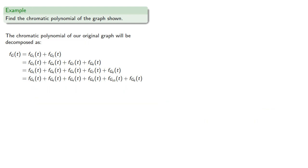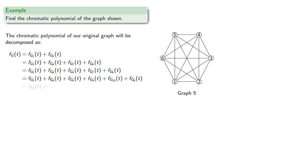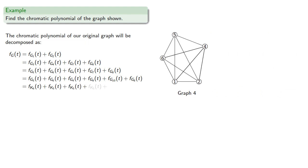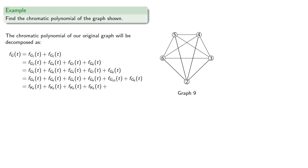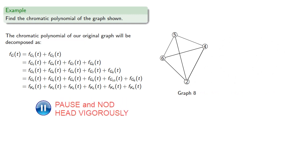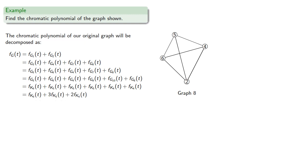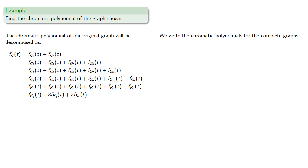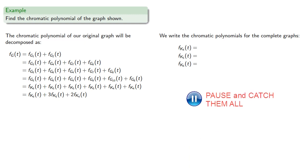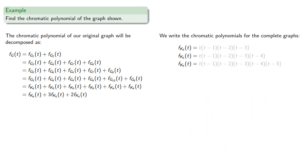Putting this all together: graph 5 is K6, graph 6 is K5, graph 4 is also K5, as is graph 9. Meanwhile, graphs 10 and 8 are K4. So we can write our chromatic polynomial as a linear combination of the chromatic polynomials of K6, K5, and K4. Writing out those chromatic polynomials for K4, K5, and K6 gives us our chromatic polynomial for the original graph.